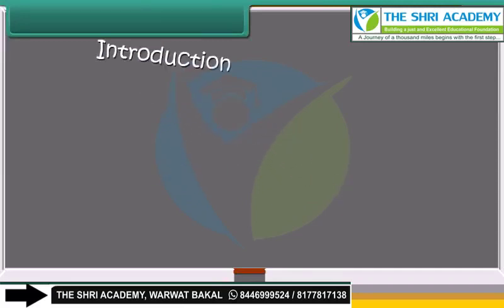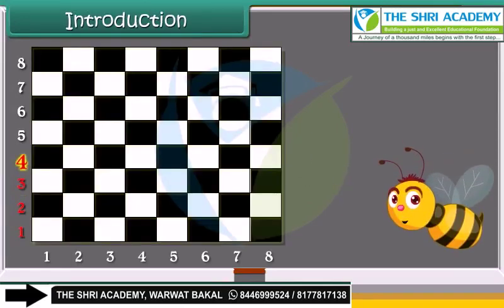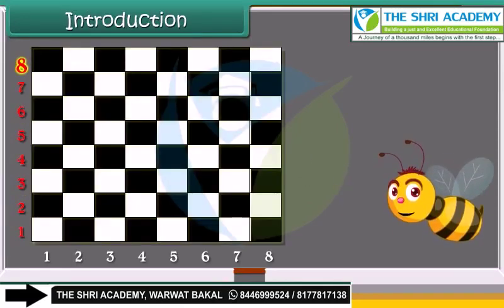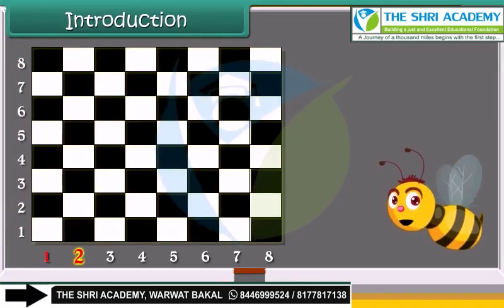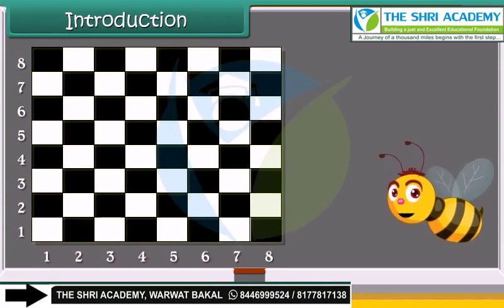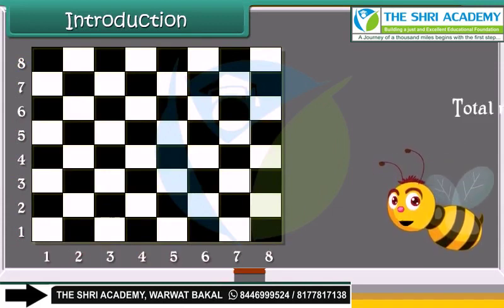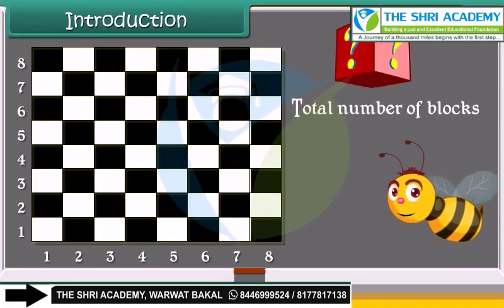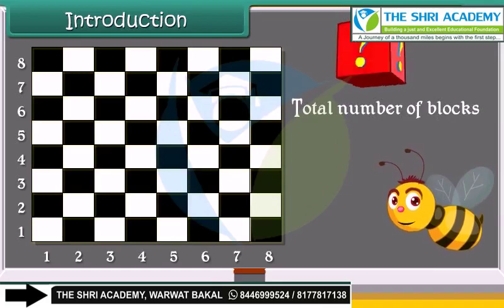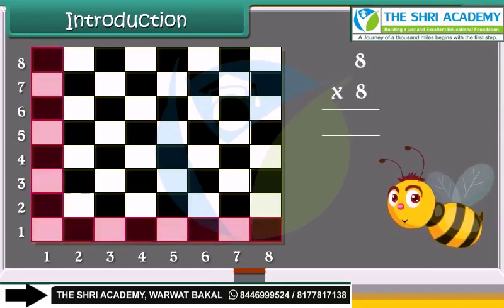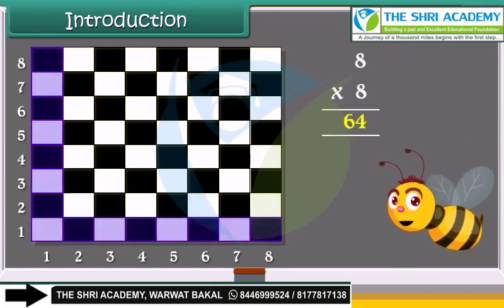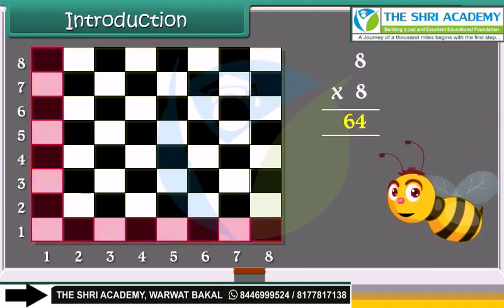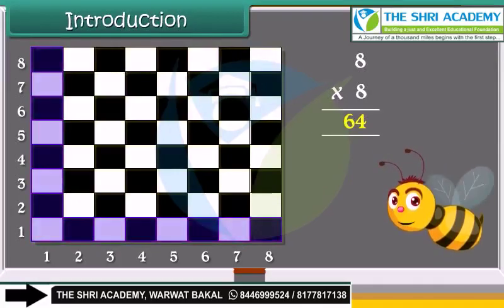A chess board has 8 rows and 8 columns. Can you tell the total number of blocks in the board? Yes, we can calculate by multiplying both the numbers. Let's study about multiplication.